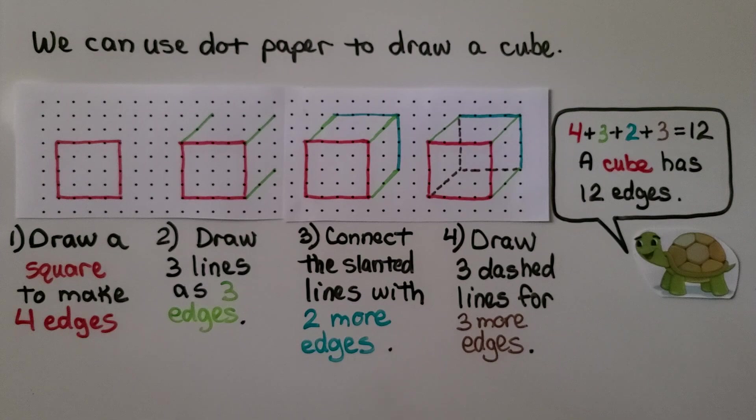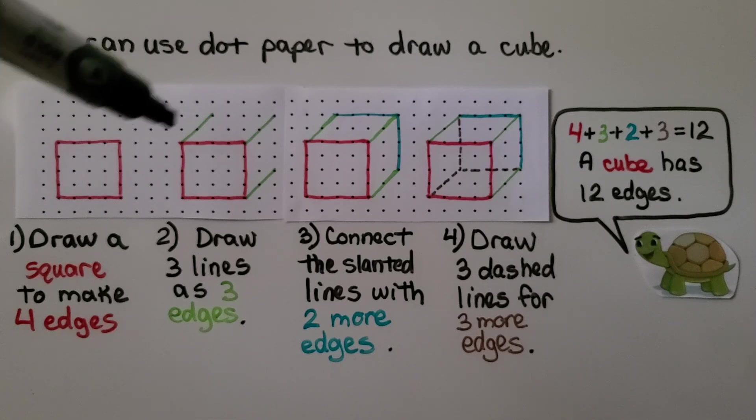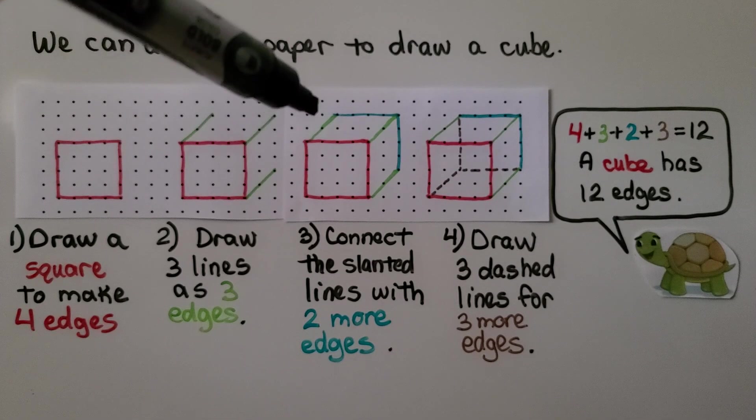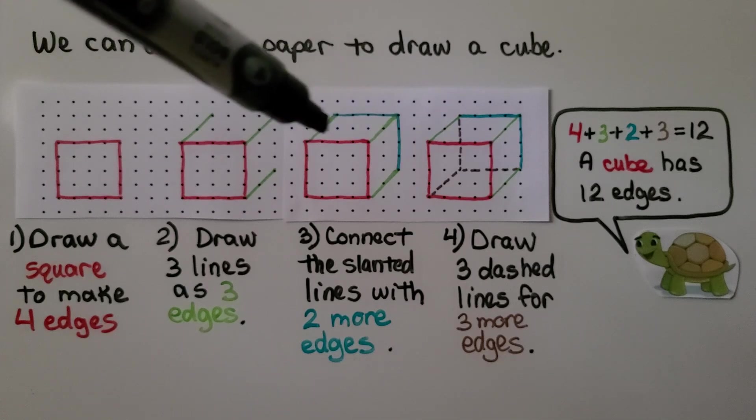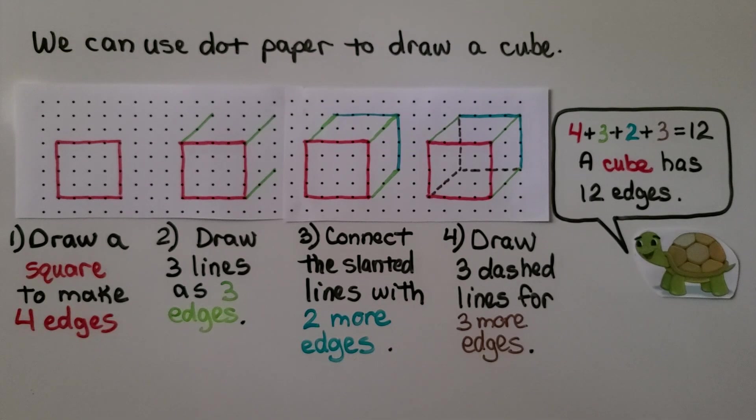We could even do this with a rectangle. If we draw a rectangle and then draw three little edges coming out of the rectangle, then connect two more edges, and then draw dashed lines, we could make a rectangular prism.